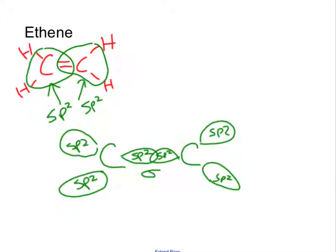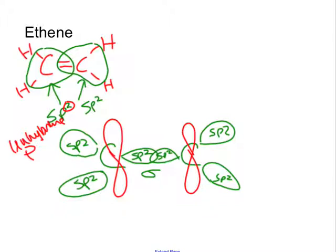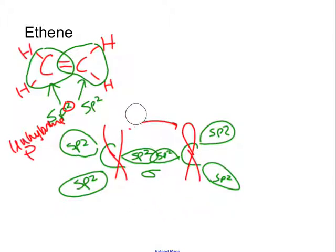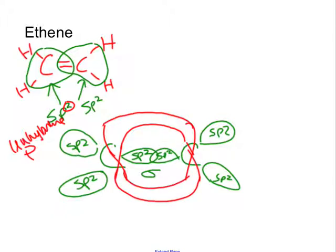But remember — because we're sp2 hybridized, each carbon has one unhybridized P orbital remaining. These unhybridized P's do a sideways overlap, top lobe to top lobe and bottom lobe to bottom lobe, creating a pi bond. So within the double bond, we have one sigma and one pi.